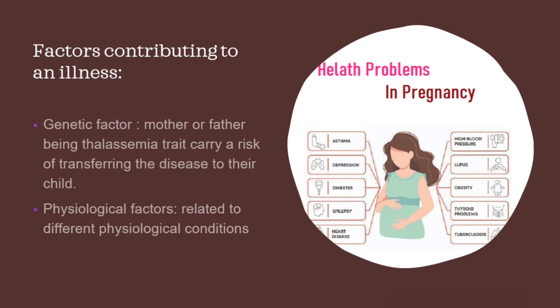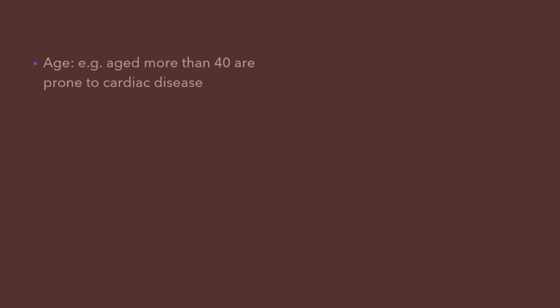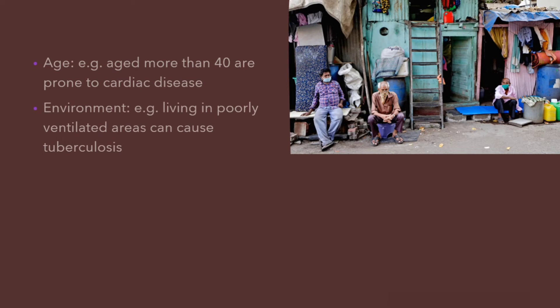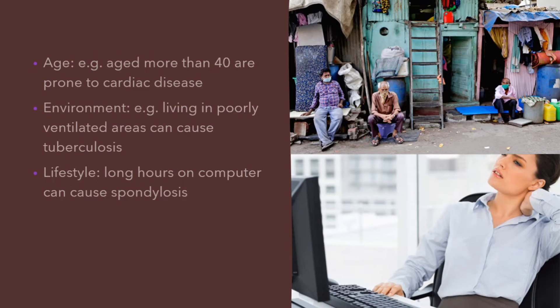That is due to their pregnancy. After their delivery is over, they generally regain their previous health. Age is a risk factor for various diseases. For example, those above the age of 40 are more susceptible to cardiovascular diseases. Environment is also an important risk factor. For example, those who live in a dirty environment without proper lighting and ventilation are susceptible to diseases like tuberculosis and many other diseases. Next is lifestyle. The way we live our life and engage in daily activities is also a risk factor. For example, those who are daily working on computers for several hours are at risk for cervical spondylosis. So, these are the risk factors of illness.